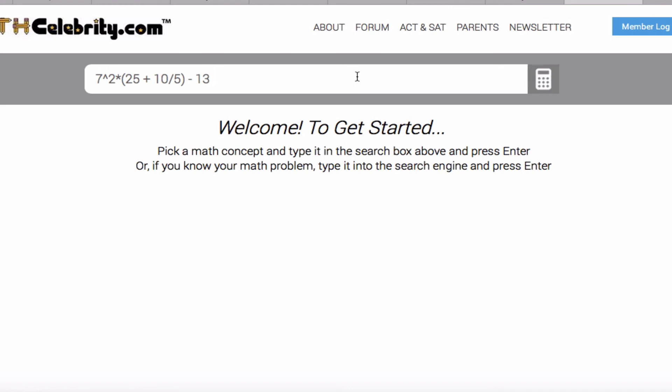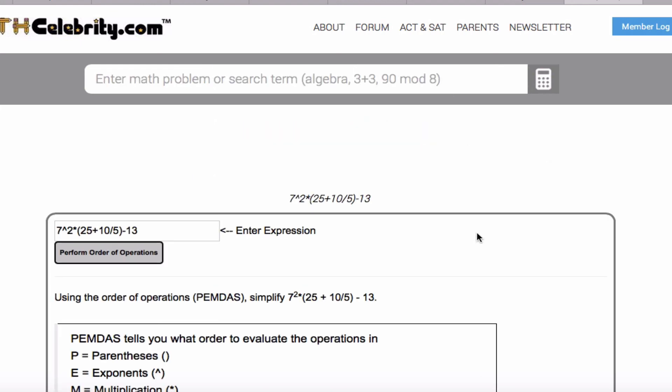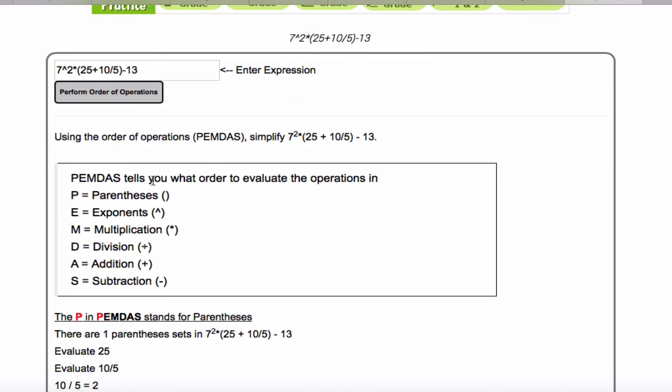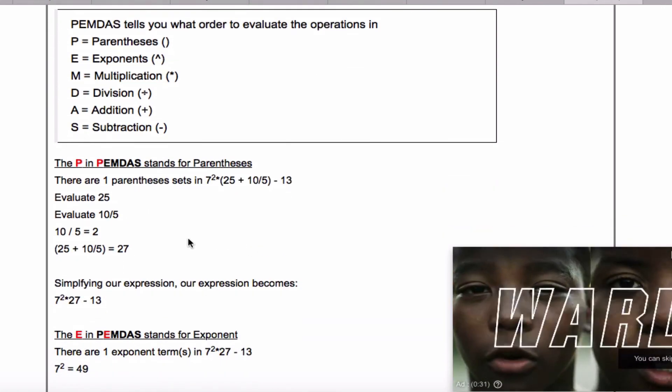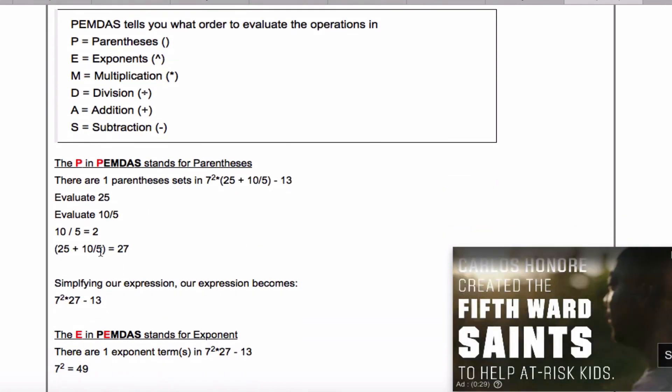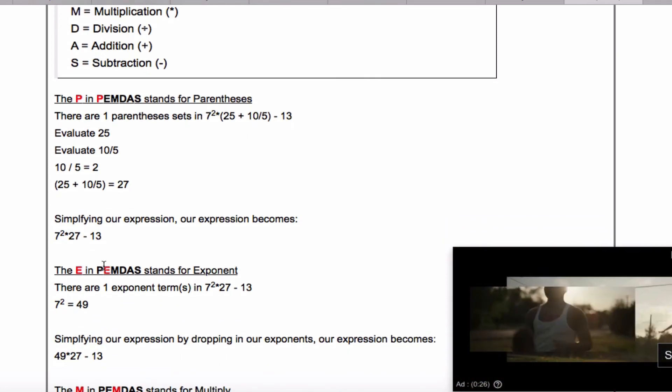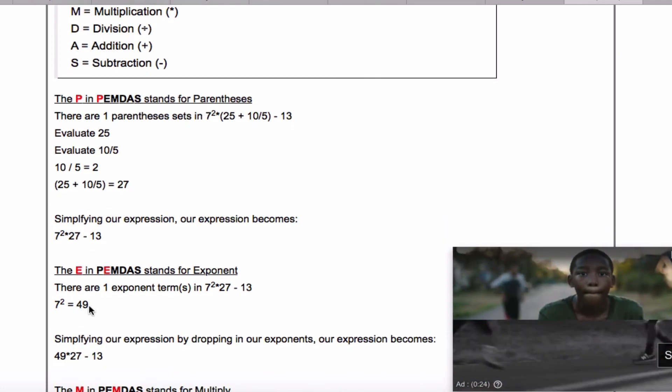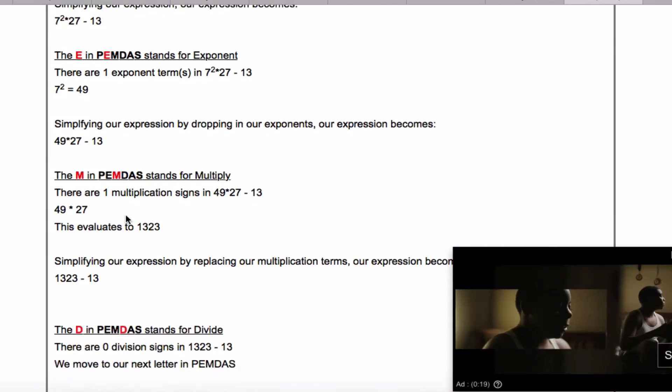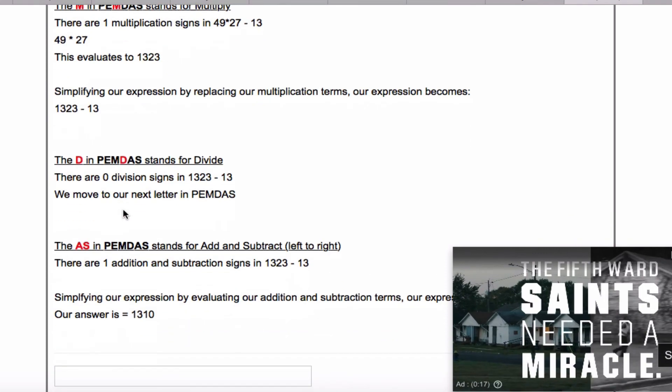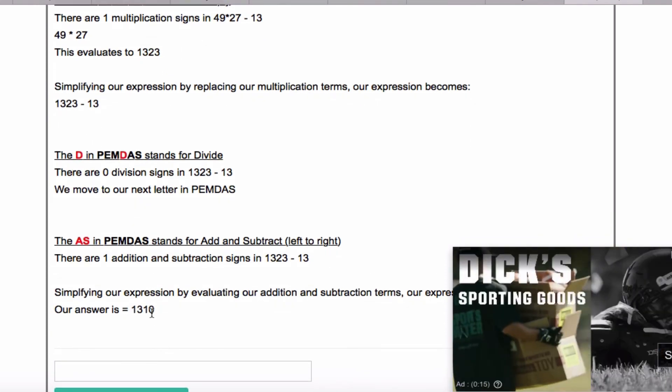So if you're ever on Math Celebrity and you want to solve these and learn how to solve them, you just enter your problem right in the search engine. So we'll go ahead and run this problem. And as you can see we've got the PEMDAS. It tells you what the PEMDAS stands for. And again, it's going to evaluate the piece in the parentheses, so that's 27. It's going to take the exponent, 49. Here's our simplified piece. It's going to evaluate the multiplication and finally the subtraction, and we get our final answer of 1,310.